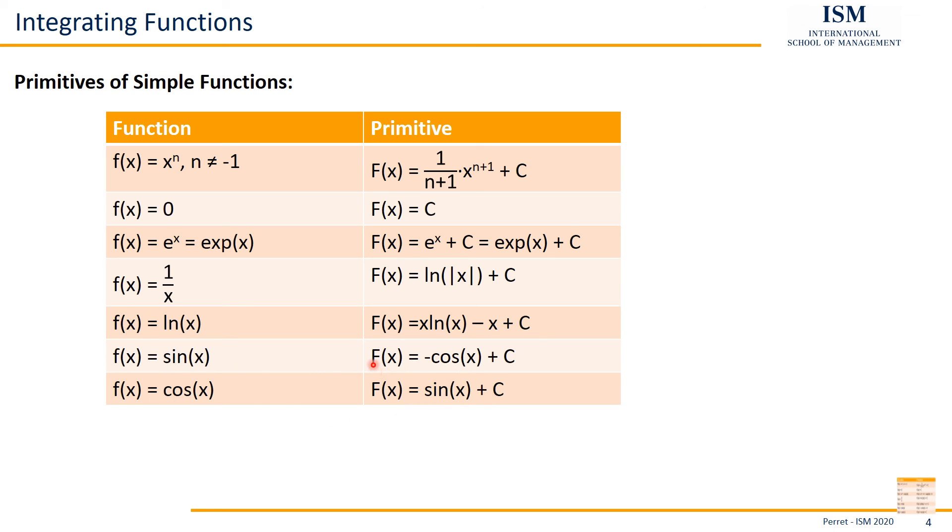That's those two here. The only thing which is a bit more complicated is actually the logarithm. Because the primitive of the logarithm looks a little bit more complex. And we could actually determine this with another special rule, particularly to the case of integrating functions. And that's a so-called partial integration. If we have something like this, we can actually get this result, this primitive for the ln.